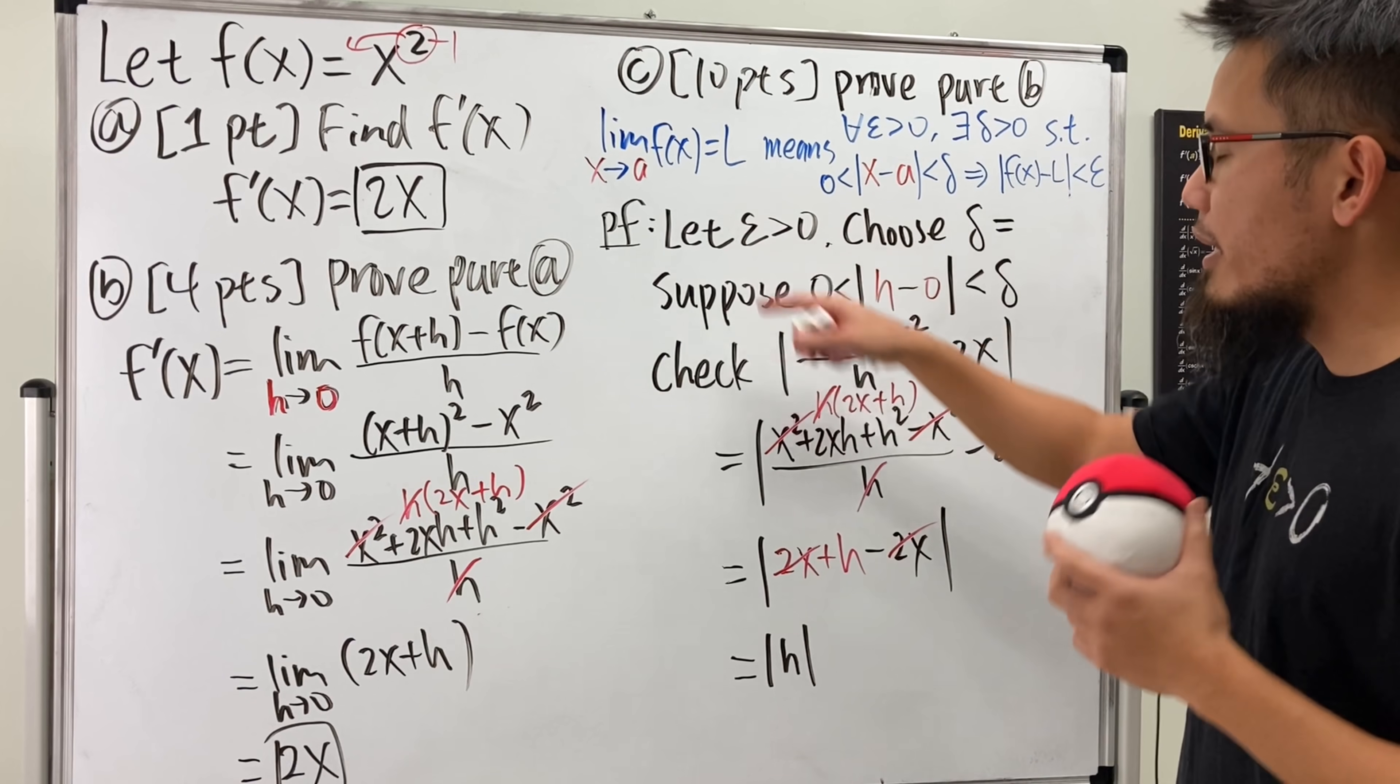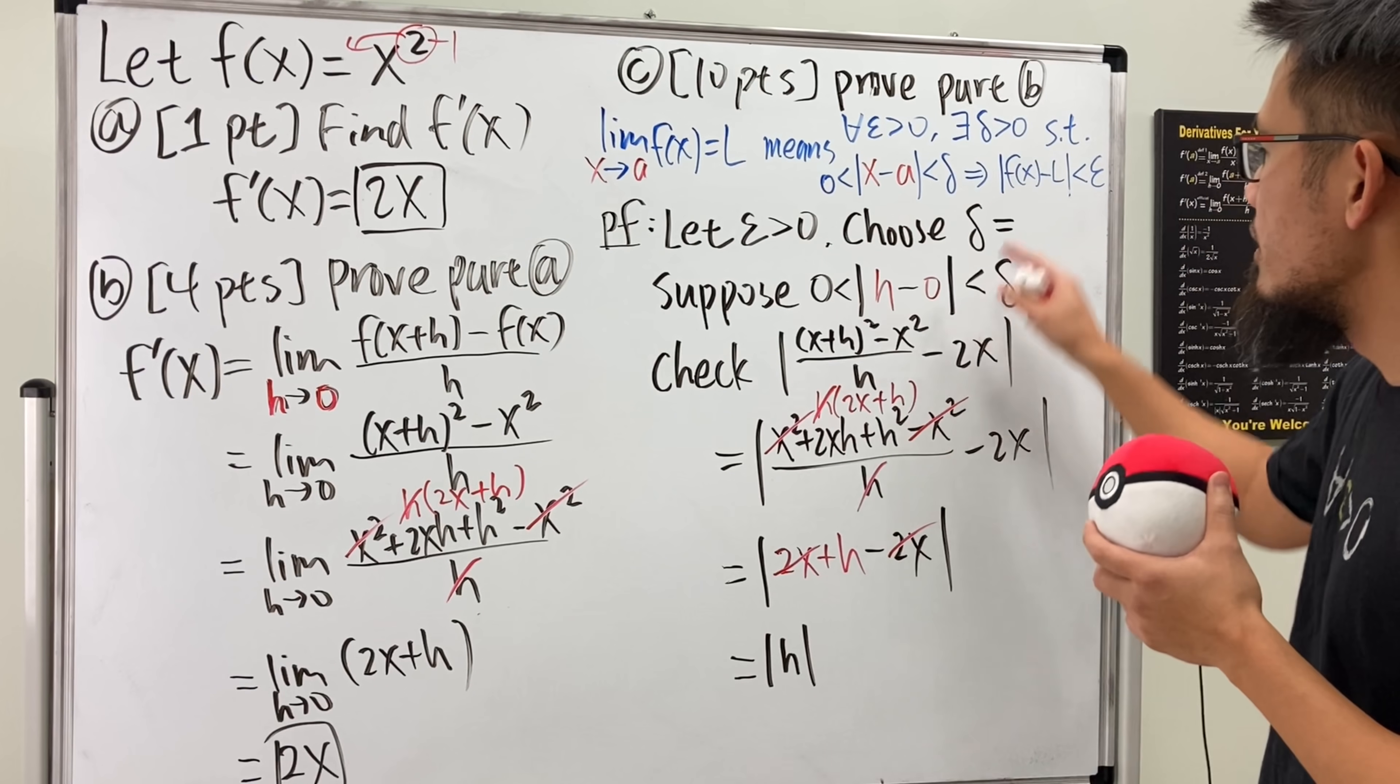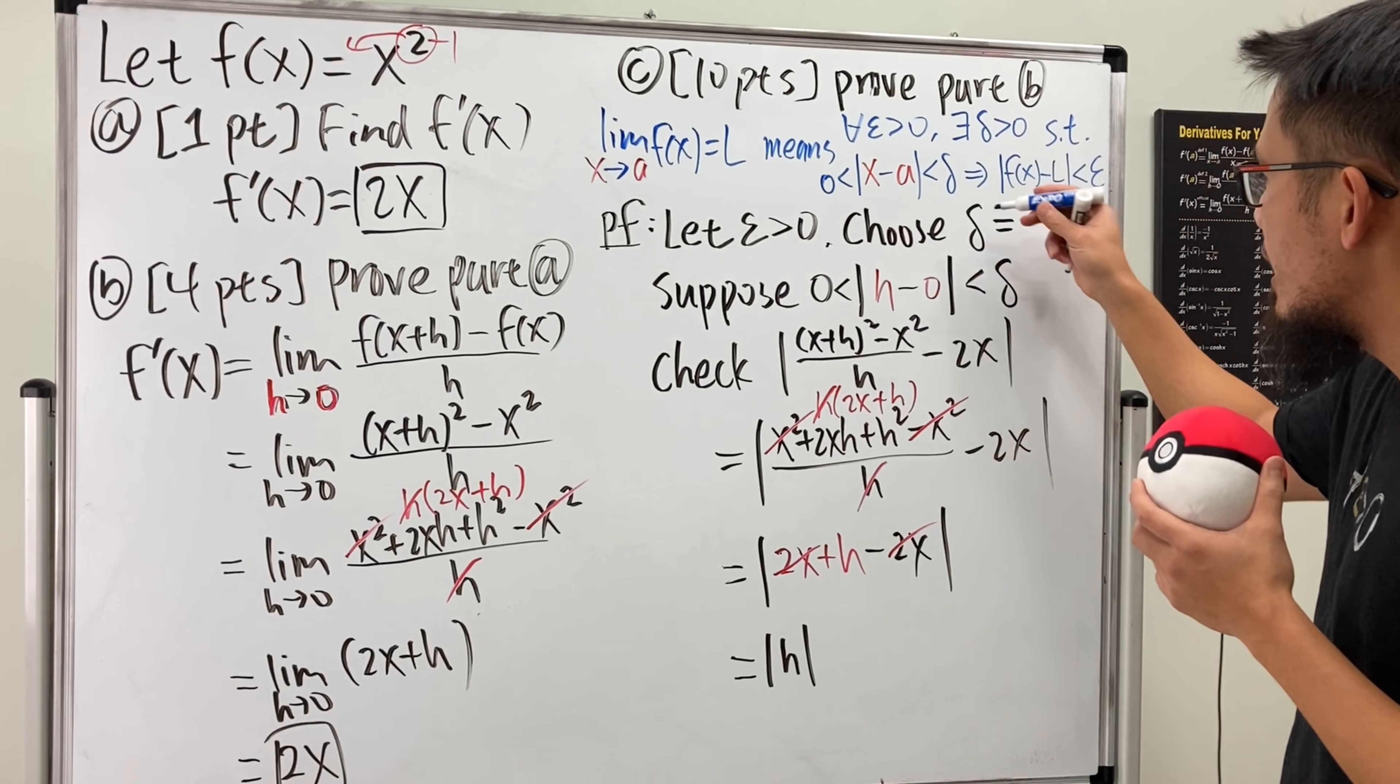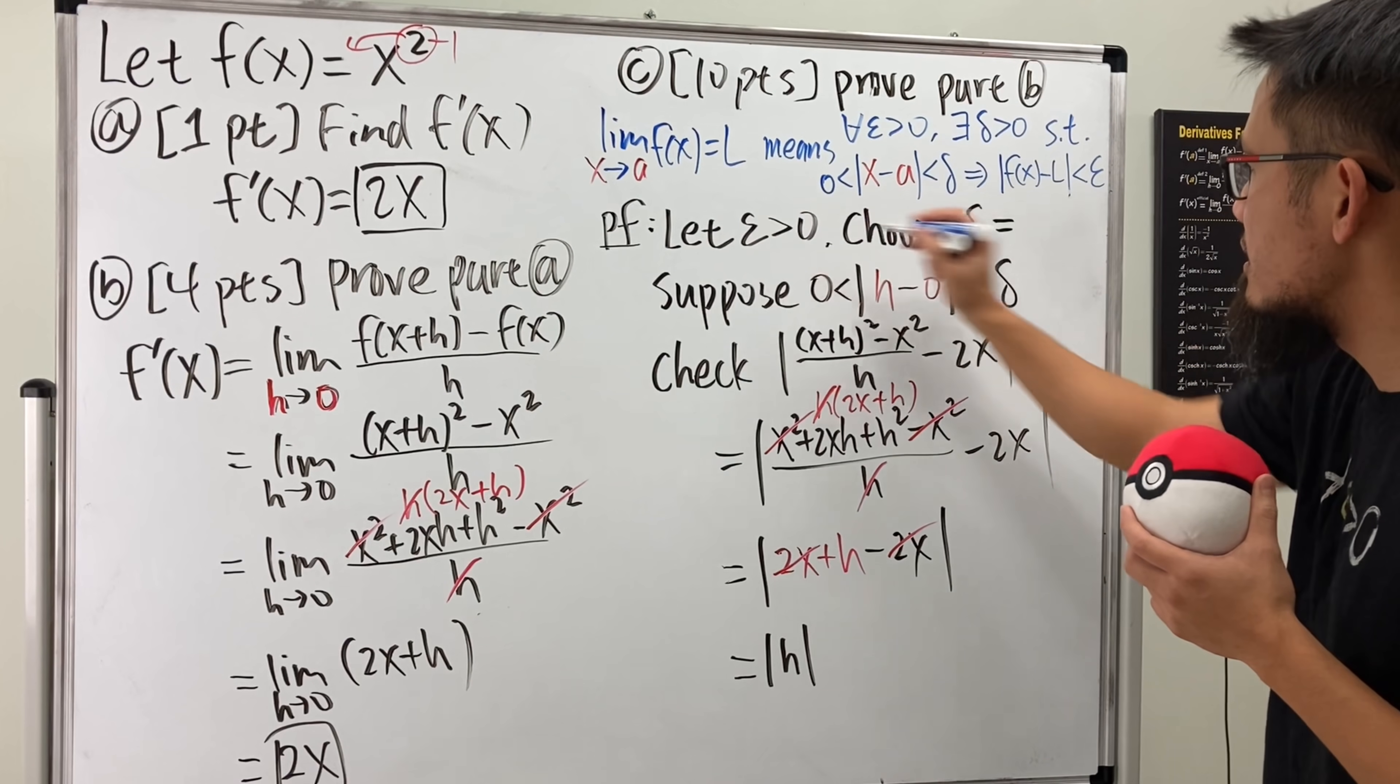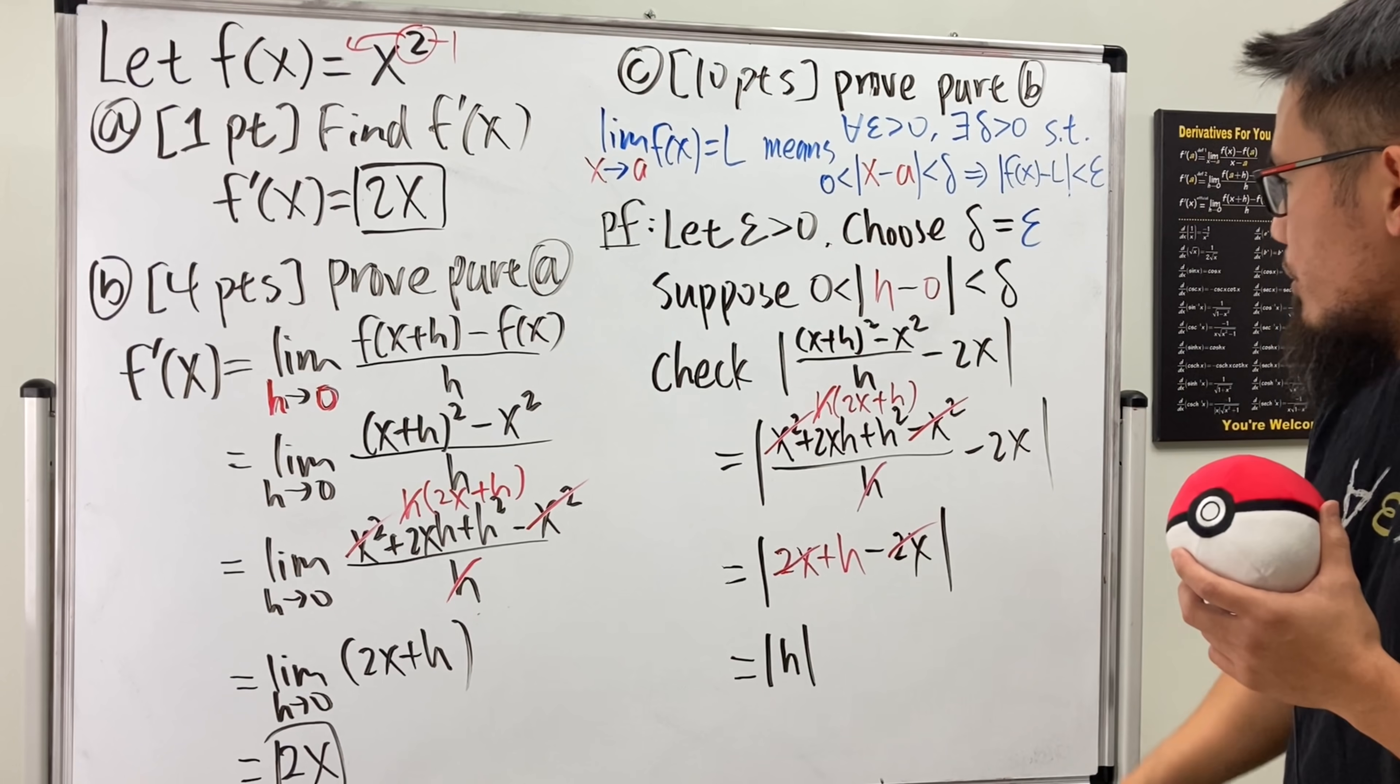And remember, this right here is given already, right, you have that to use already. The delta will be based on epsilon. And let me tell you, we are going to choose delta to be the same as the given epsilon. Right? The given epsilon.